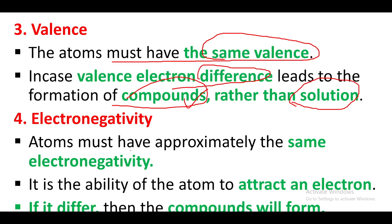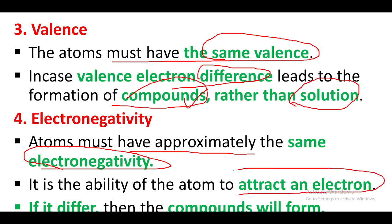The fourth rule is electronegativity. The atoms must have approximately the same electronegativity — that is, the same ability to attract electrons. If the electronegativity is different between the two elements, a compound is automatically formed rather than a solid solution.